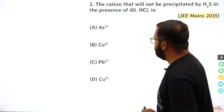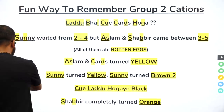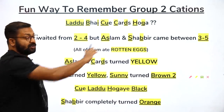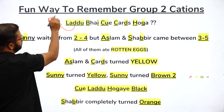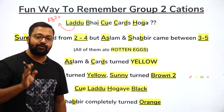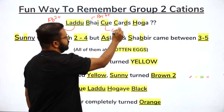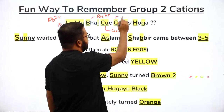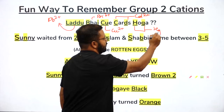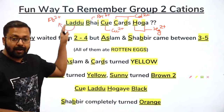The mnemonic is: 'Laddu bhai Q cards ho ga.' Laddu = Pb²⁺ (lead); Bhai with underlined B and I = Bi³⁺ (bismuth in +3 oxidation state); Q = Cu²⁺ (copper); C = Cd²⁺ (cadmium); and Hg²⁺. That's how you remember the Group 2 ions using the first part of the mnemonic.